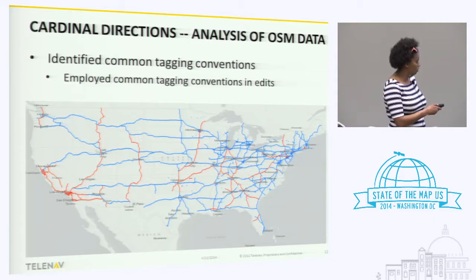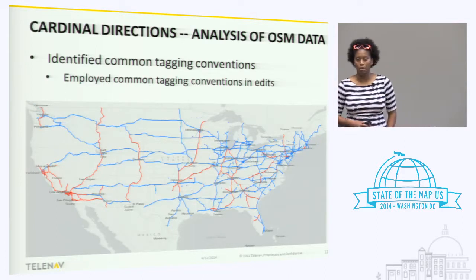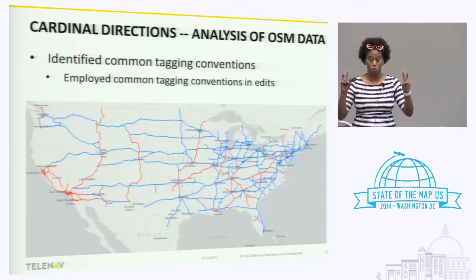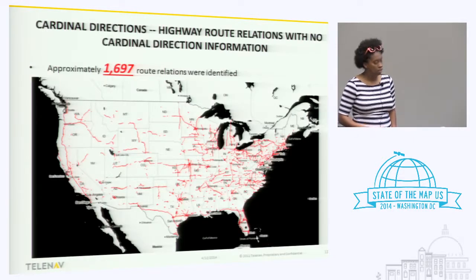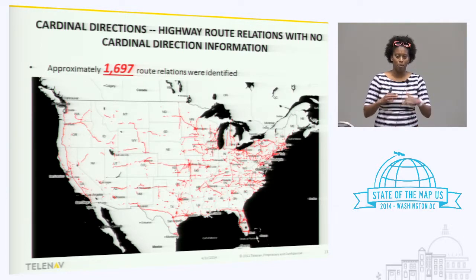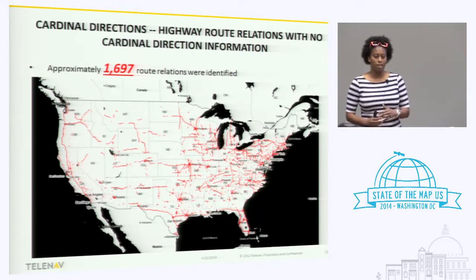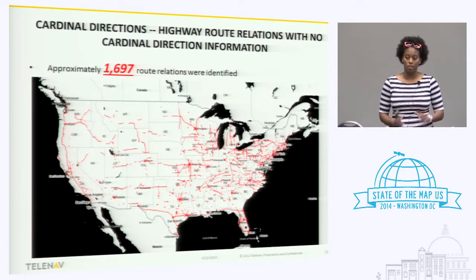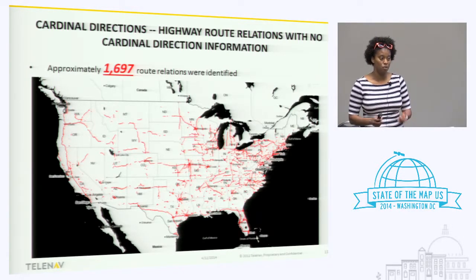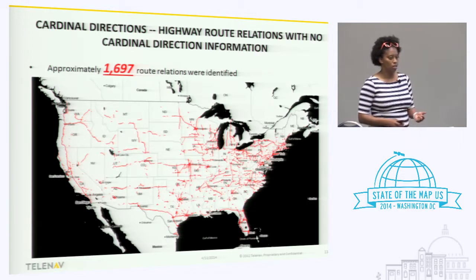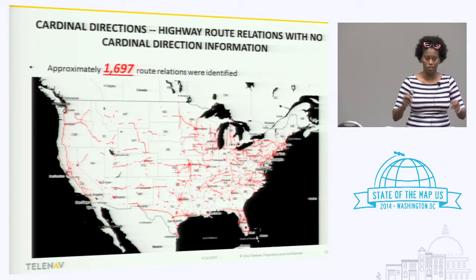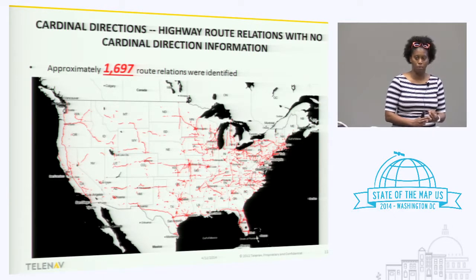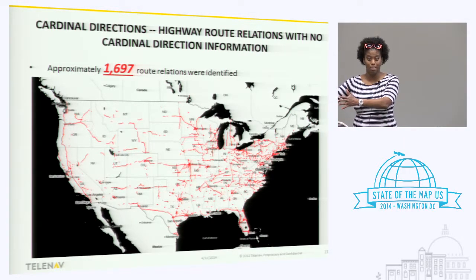The majority of the relations that we looked at were tagged with the member role value of north, south, east, west — and that's what the blue edges in this map represent. The red edges in the map represent highway route relations that are tagged with a direction tag. We needed to see where there are gaps in the data, and we realized that nearly 1,700 relations within the United States did not have cardinal direction information. So we established, one, how people are tagging the data — it was just convention — and two, we identified where the gaps in the data were, so we needed to go ahead and update the data.